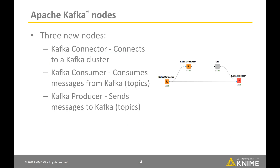Apache Kafka is an open source publish-subscribe messaging system focusing on high performance, vertical scalability, and fault tolerance. This first version of KNIME's Apache Kafka integration ships with three new nodes: the Kafka Connector, which connects to a Kafka cluster; the Kafka Consumer, which consumes messages from Kafka; and the Kafka Producer, which sends messages to Kafka.